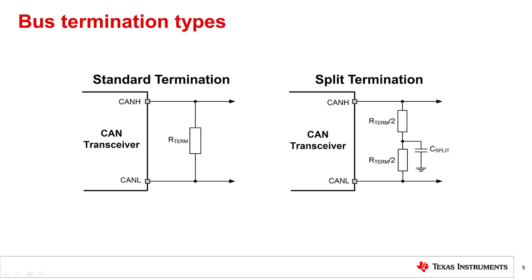Termination can be accomplished in different ways. Standard termination uses a single termination resistor at each end of the bus. An alternative method is split termination, shown on the right, which improves signal integrity and electromagnetic emission characteristics. It can also eliminate fluctuations in the bus common mode voltage levels while allowing differential fluctuations to remain.